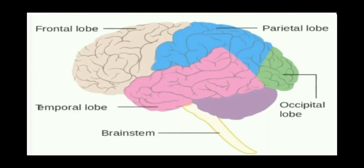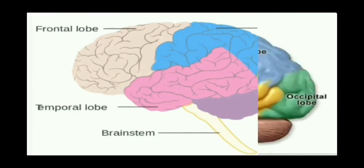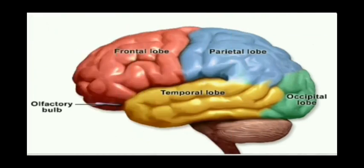The first is the Frontal lobe. We have a personality and we have a character. The frontal lobe is associated with personality. For example, if we get into an accident, we have a character change related to the accident. This is the frontal lobe.